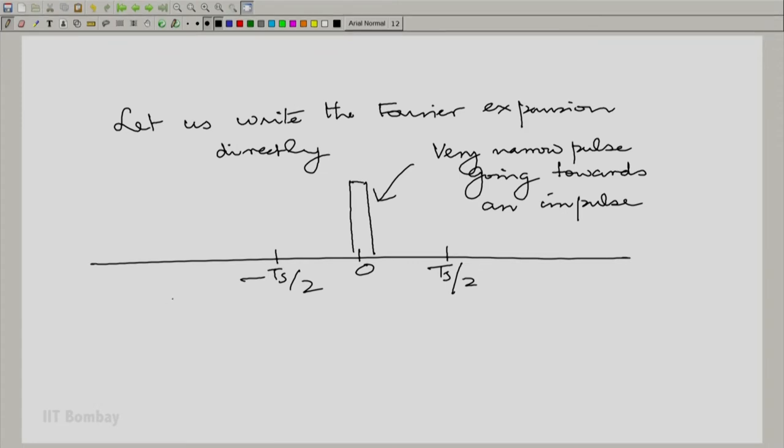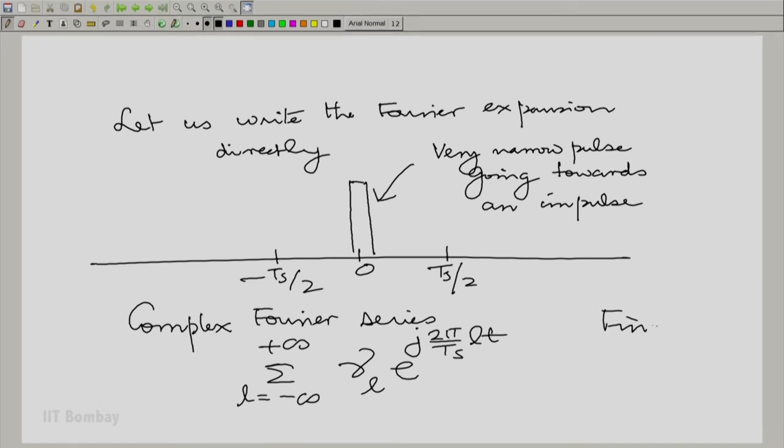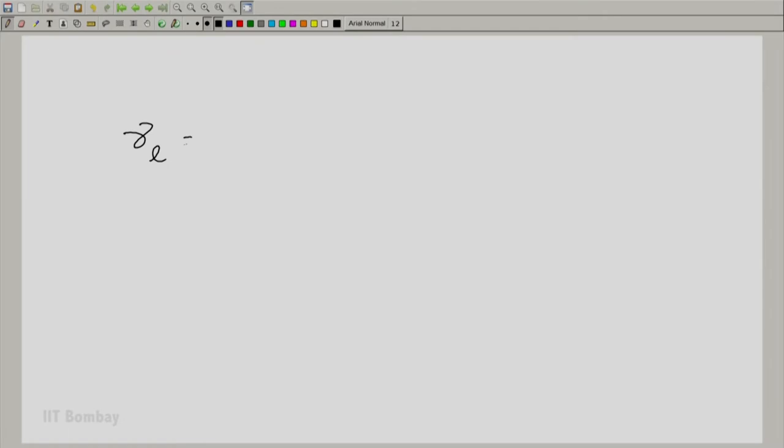So how would we write the Fourier? Let us write this time for variety, the complex Fourier series. We know how to do that. That is easier to do also here. So complex Fourier expansion or complex Fourier series should be of the form: summation l going from minus to plus infinity, gamma_l times e^(j2π/T_s·l·t). And we need to find the coefficients gamma_l. And finding gamma_l is very easy. All that we need to do is to recognize that gamma_l is obtained. These are all orthogonal.